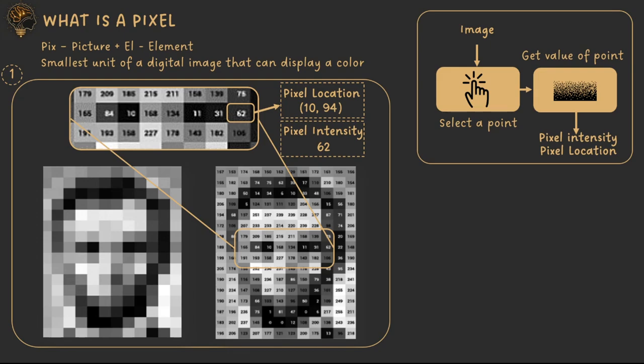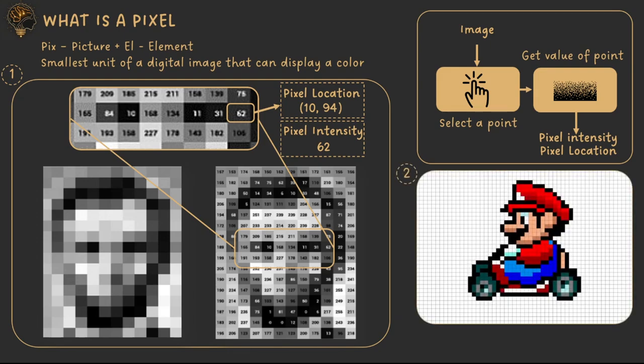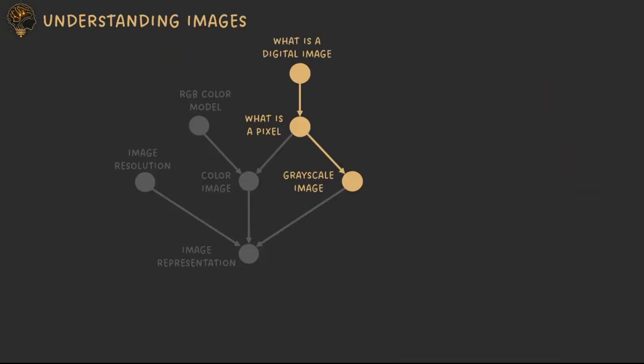The utility of knowing a pixel is that it's the fundamental building block of an image, so it's used everywhere images are used. One example could be creating interesting pixel art. Moving on to grayscale images.